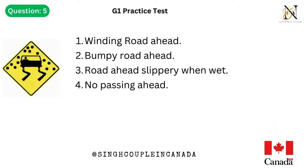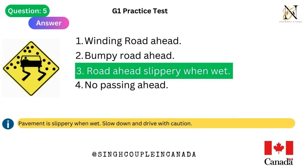Question 5. This traffic sign means: 1. Winding road ahead. 2. Bumpy road ahead. 3. Road ahead slippery when wet. 4. No passing ahead. Answer is 3. Road ahead slippery when wet — pavement is slippery when wet.